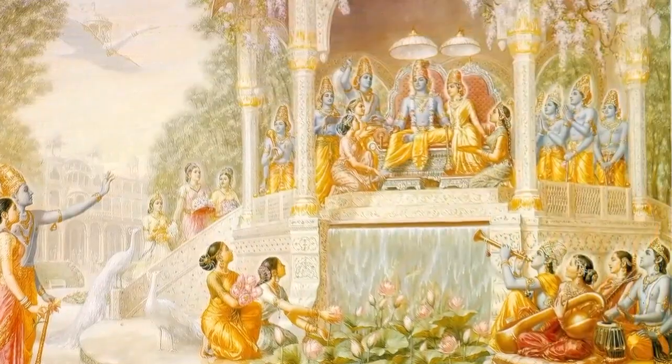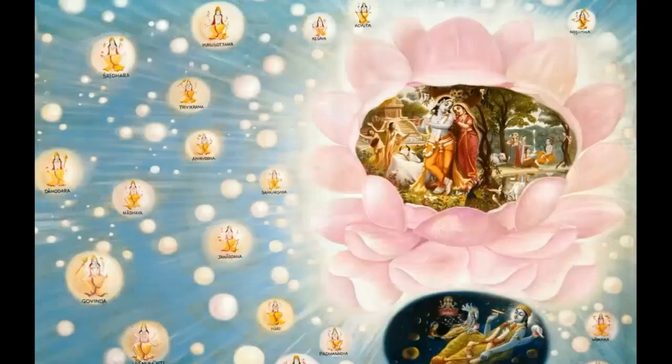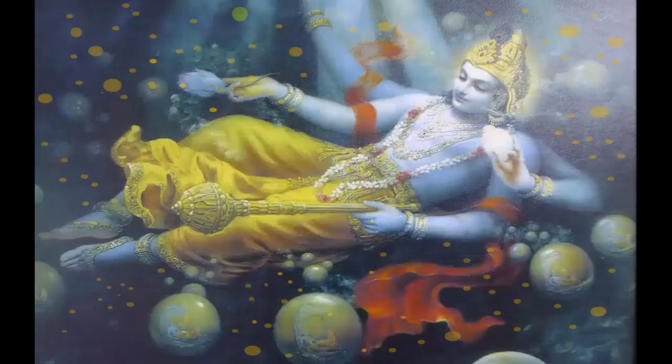To accommodate those souls who voluntarily choose to go elsewhere, a dark cloud manifests. This is called the Mahatattva, or the material world. Krishna expands in the form of Karanodakashayi Vishnu and lies within, upon the causal ocean.